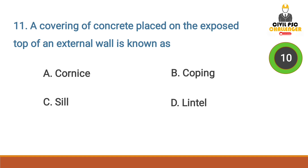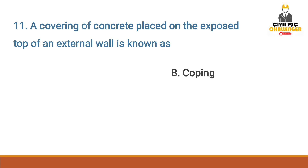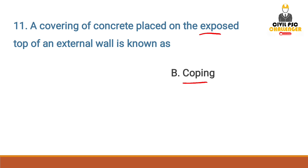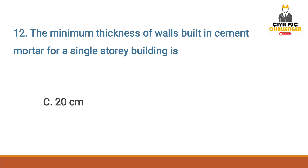A covering of concrete placed on the exposed top of an external wall is known as — Answer option B: Coping. The minimum thickness of walls built in cement mortar for a single-story building is — Answer option C: 20 cm.